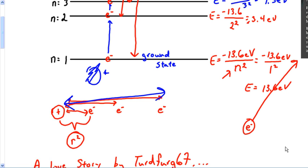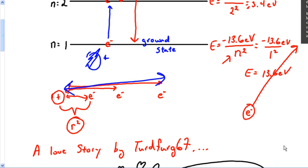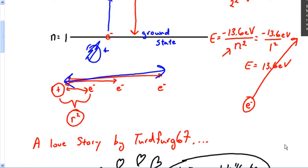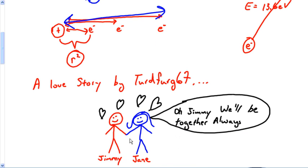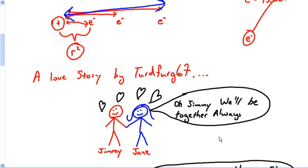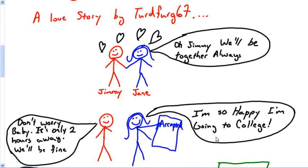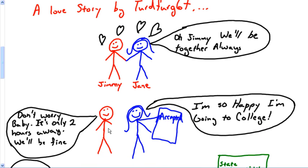I tell students in class it's kind of like the high school classic love story. You're in high school, everything is great — Jimmy and Jane, the cutest couple you've ever seen. But an electron is no different than this little high school relationship. She's going to college — it's only two hours away — and you notice they're starting to get a little distance.